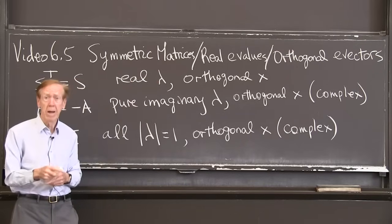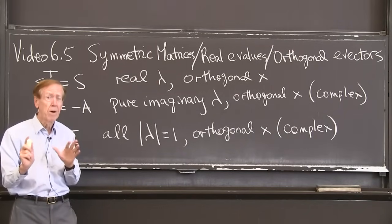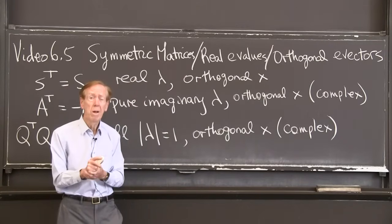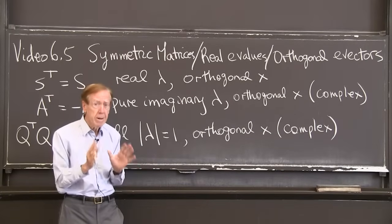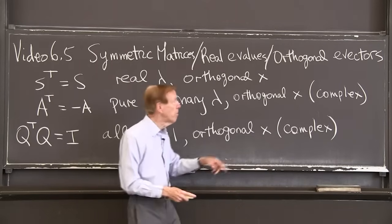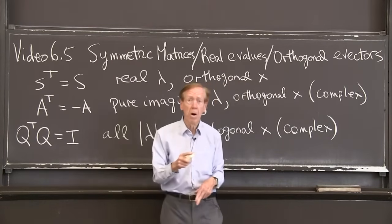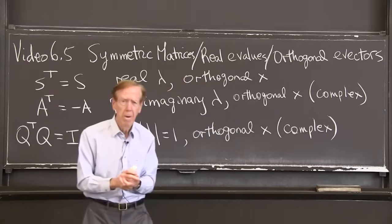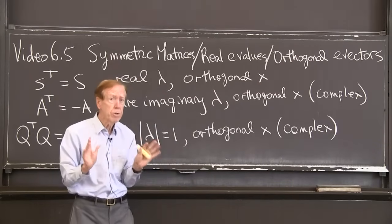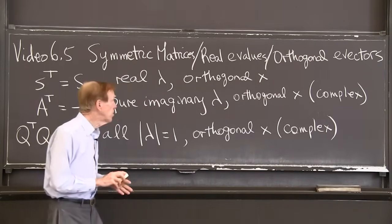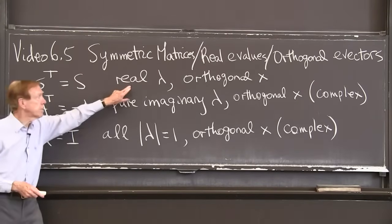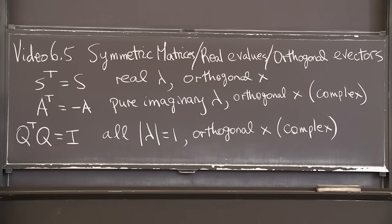If a matrix is symmetric, and I'll use capital S for symmetric matrix, the first point is the eigenvalues are real, which is not automatic, but it's always true if the matrix is symmetric. And the second, even more special point, is that the eigenvectors are perpendicular to each other. Different eigenvectors for different eigenvalues come out perpendicular. Those are beautiful properties. They pay off. So that's the symmetric matrix: real lambda, orthogonal x.